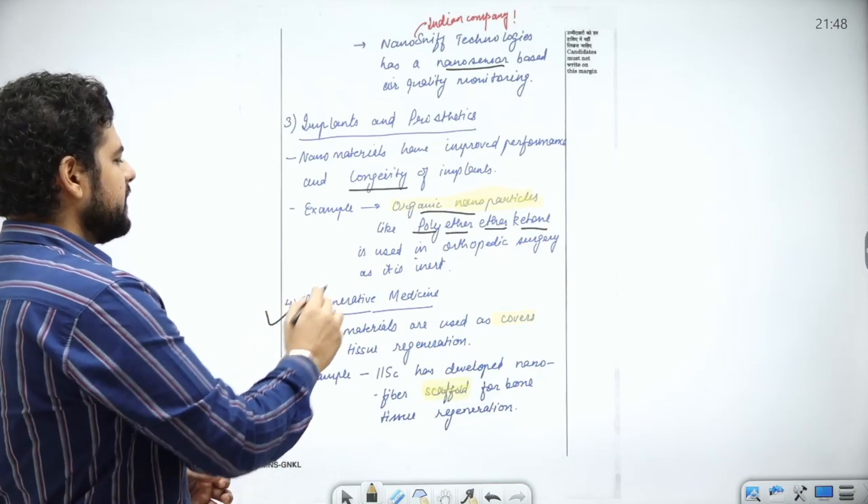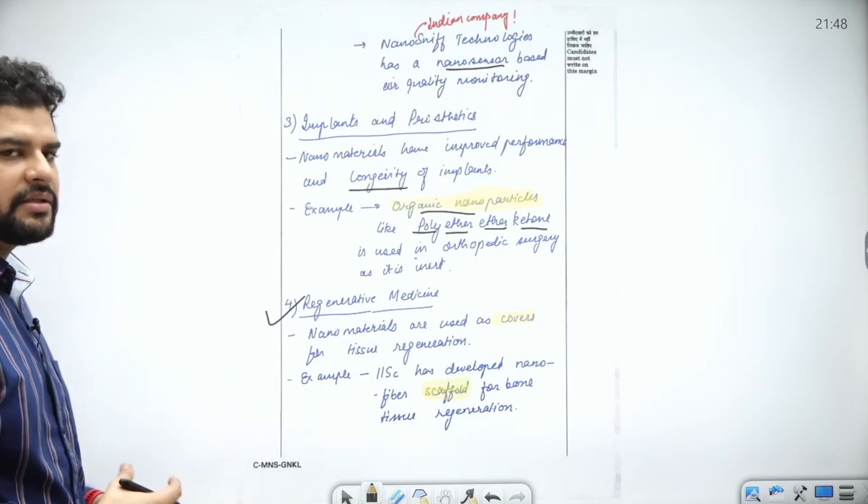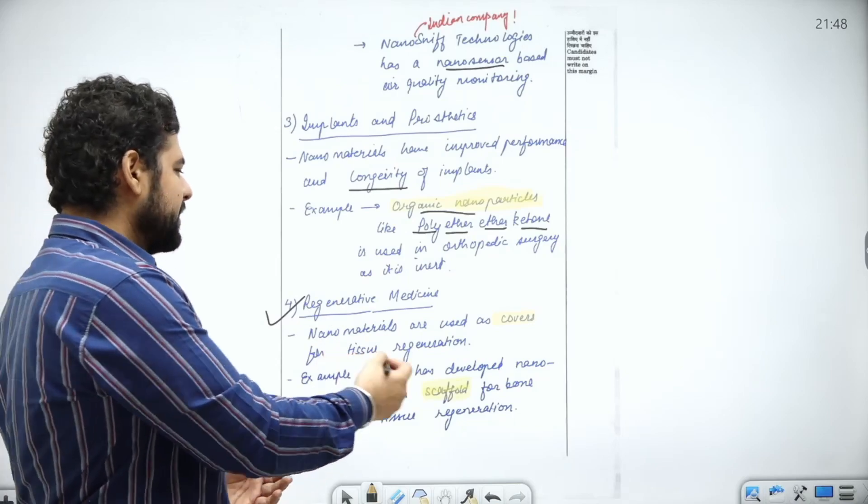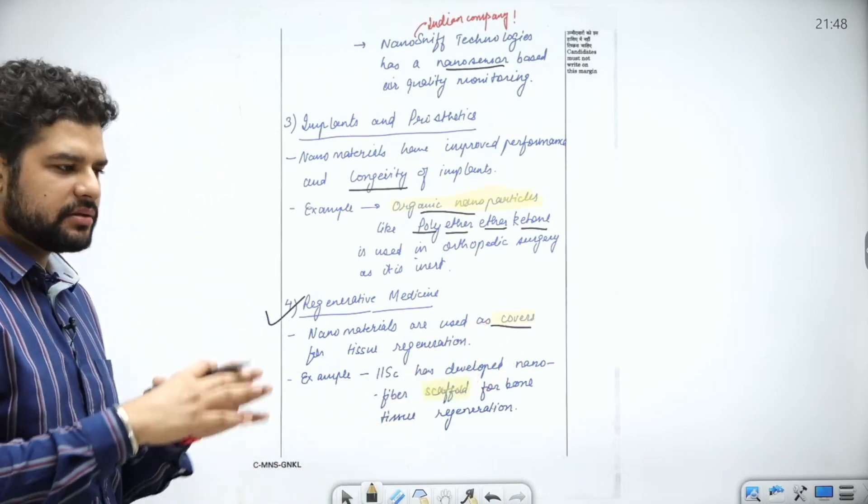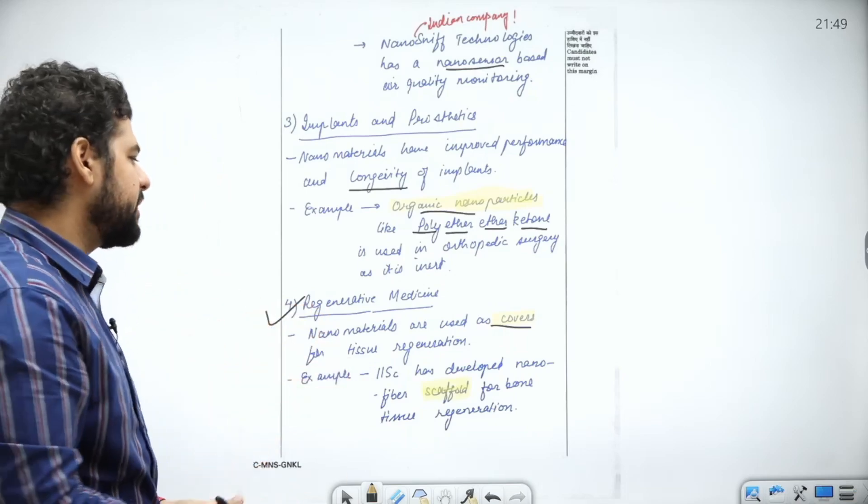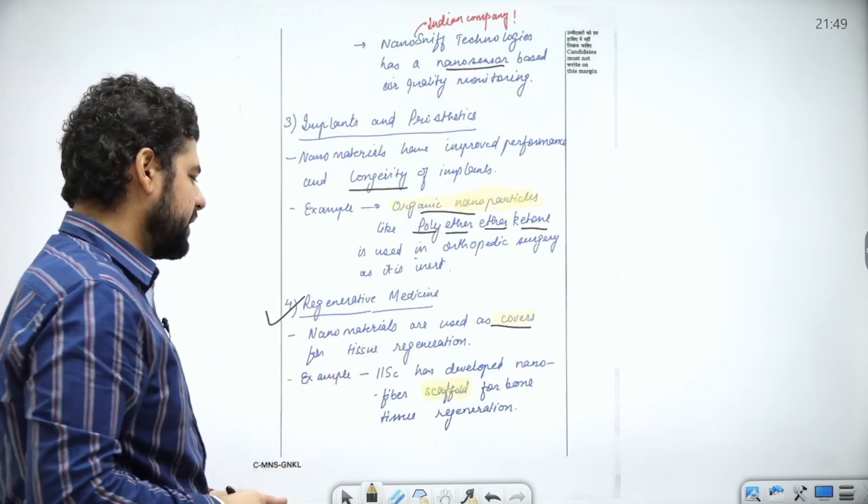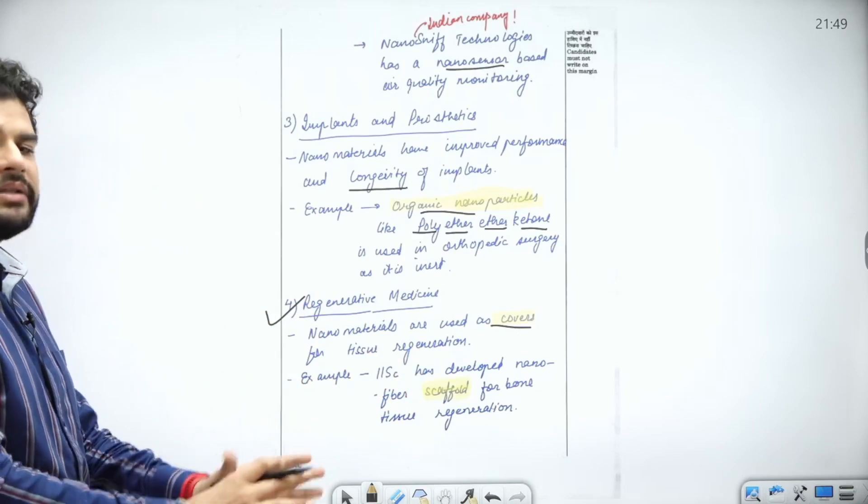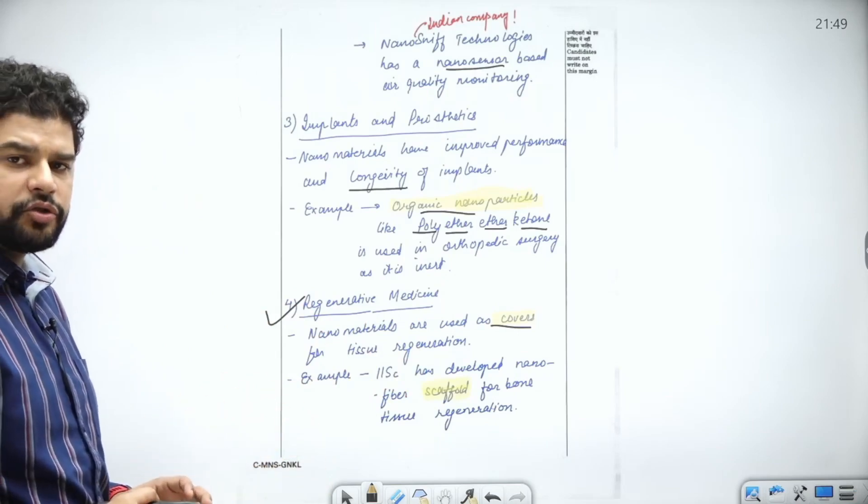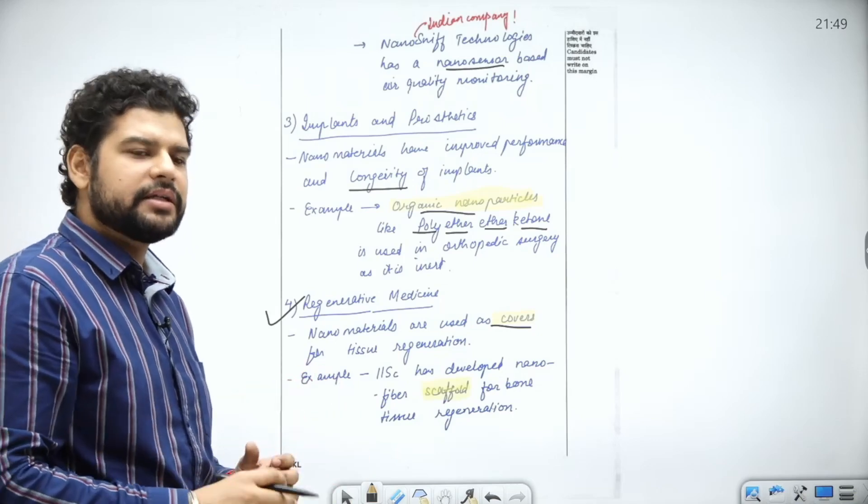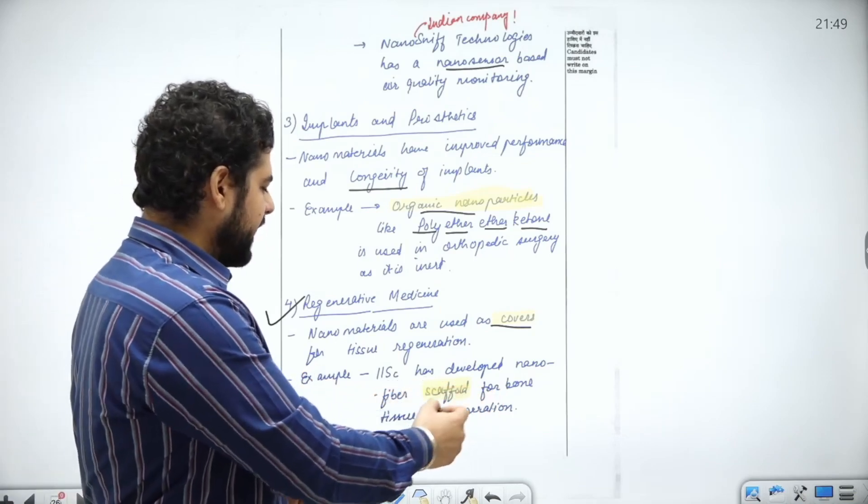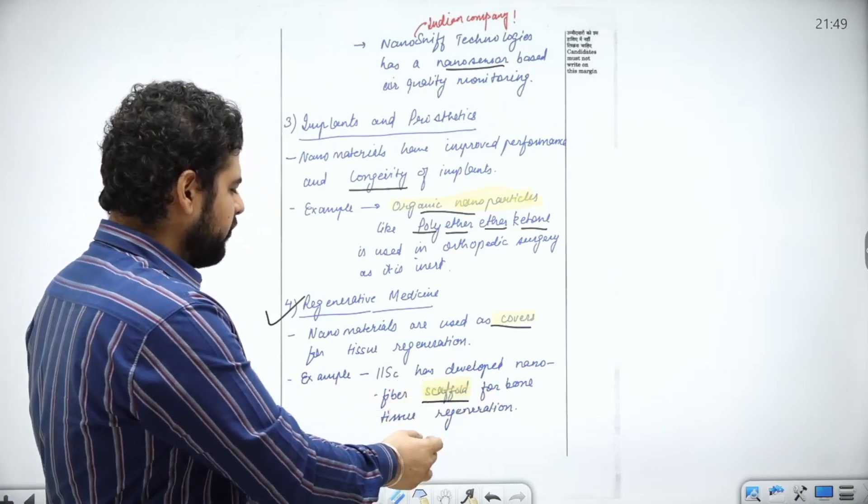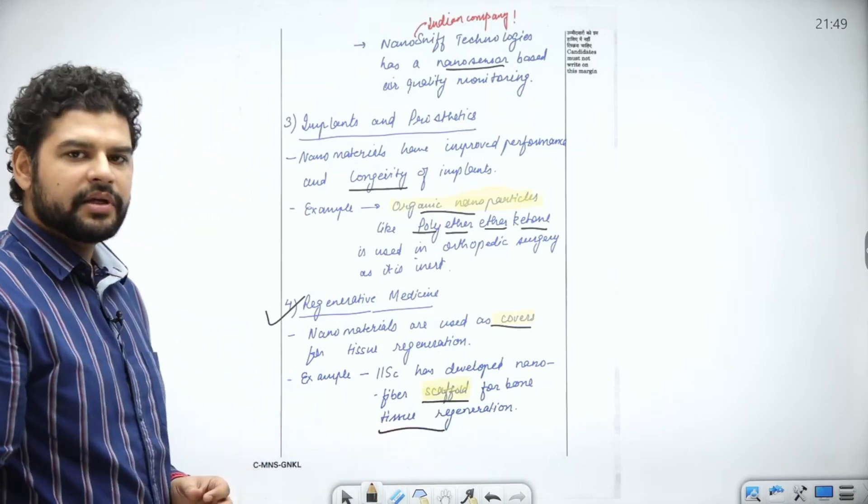Next is regenerative medicine, that means creating new cells. Nanomaterials are used as scaffolding, something which protects the material for tissue regeneration. For example, the Indian Institute of Science has developed nanofiber scaffolding for bone tissue regeneration.